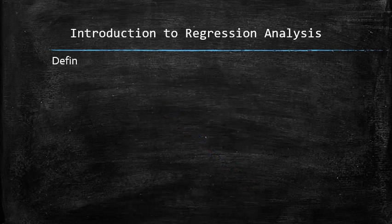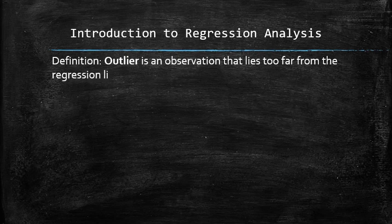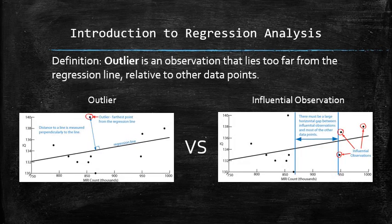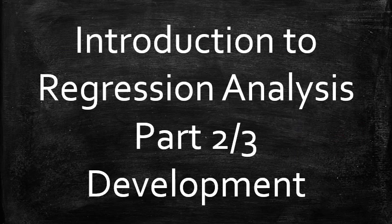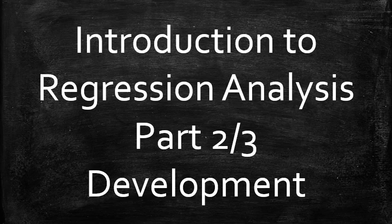Outlier is an observation that lies too far from the regression line relative to other data points. It is important to distinguish between the influential observations and outliers. We just developed a formal procedure that allows us to find the relation or the correlation between two quantitative variables such as the value and the age of the vehicle.